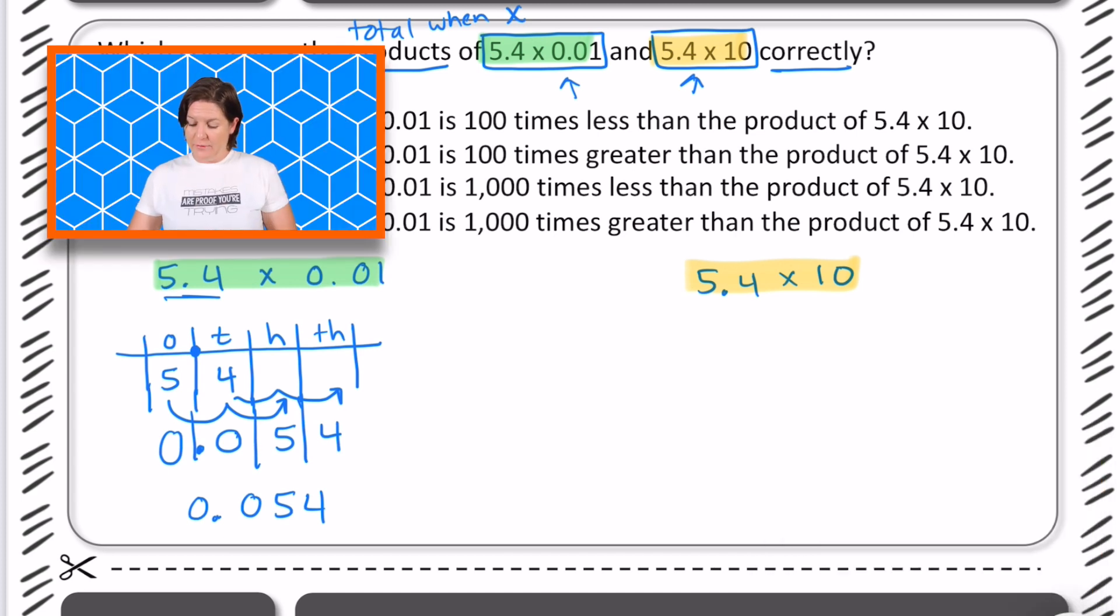Alright, on the other side, we have 5.4 times 10. Because 10 is a value greater than one, it's going to create a greater product than 5.4. And if you're like, what do you mean? This is what I mean. So here in the ones place, we have the digit five again. And then we also have the four in the tenths place. I know we're going to be going this way because it's going to be getting bigger. This is the tens place and hundreds place.